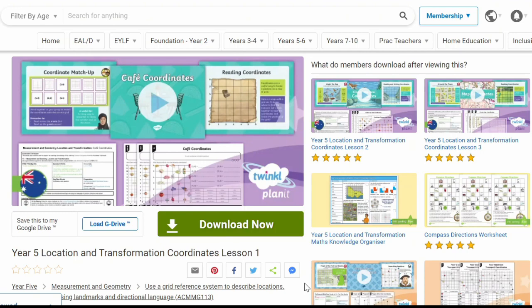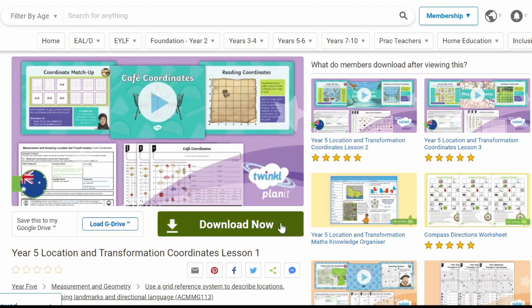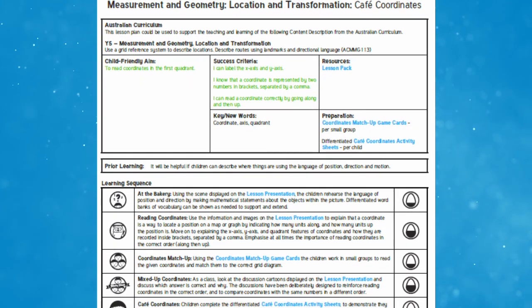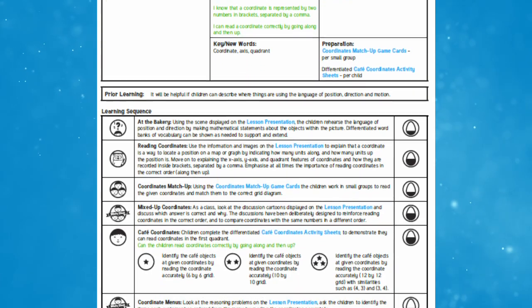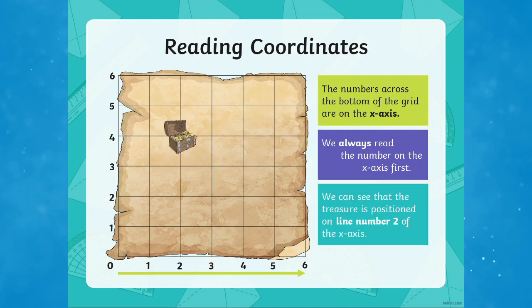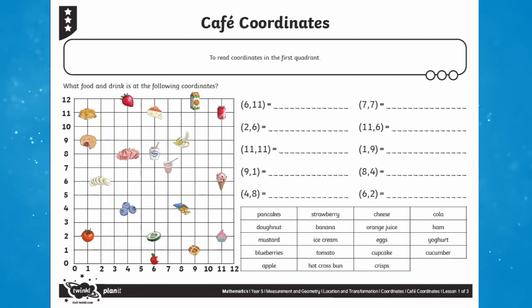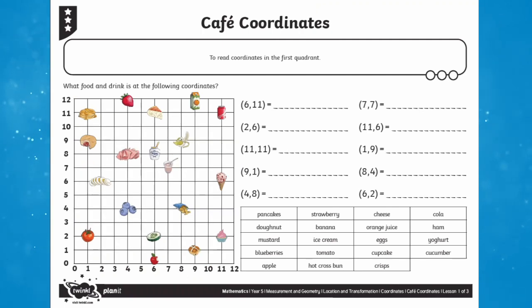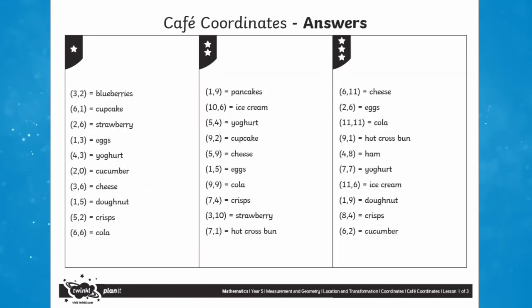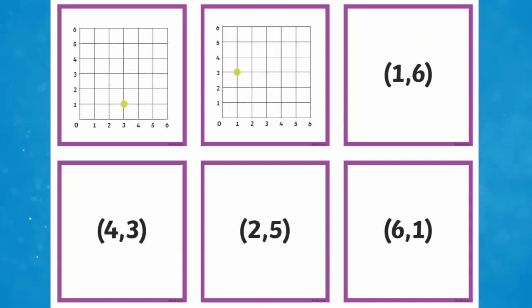There are even full lesson packs for children in Year 5. The first one of this set includes a detailed lesson plan, slideshow presentation, differentiated worksheets, and a card game. Like all Twinkle Planet lessons, they've been designed by teachers and align with the Year 5 Australian Mathematics Curriculum.